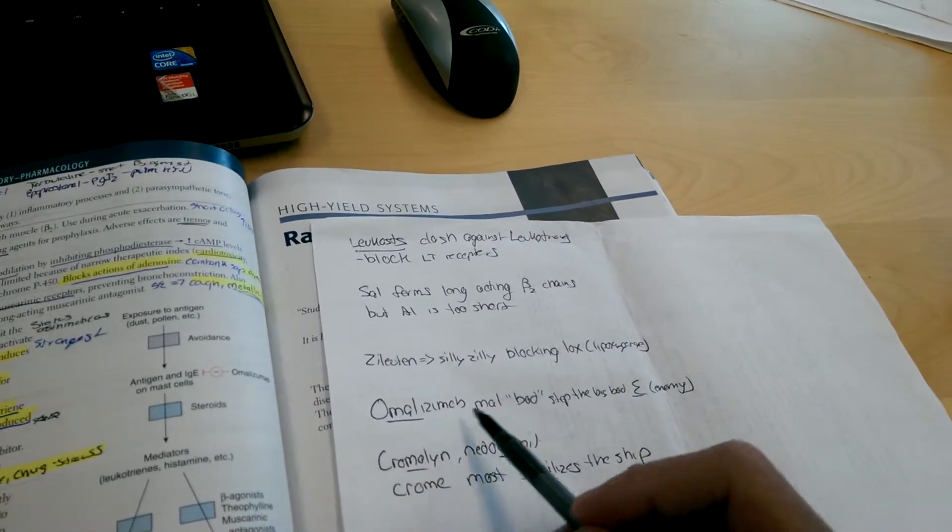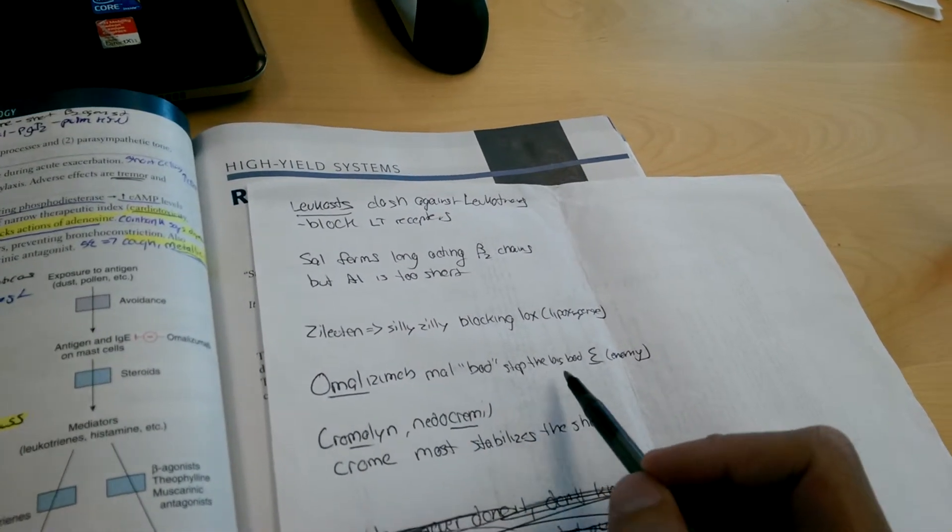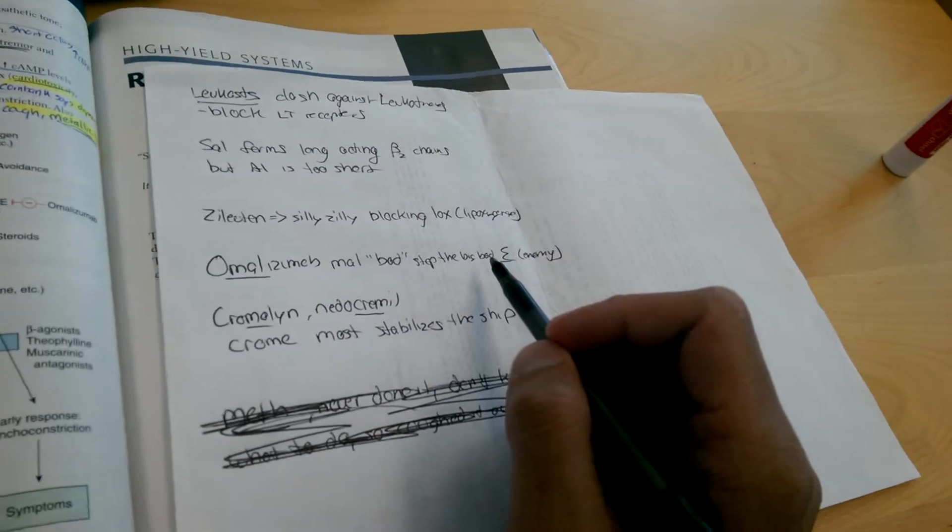Omalizumab. Mal means bad, so we got to stop the big bad E for enemy. That's the IgE antibody blocker.